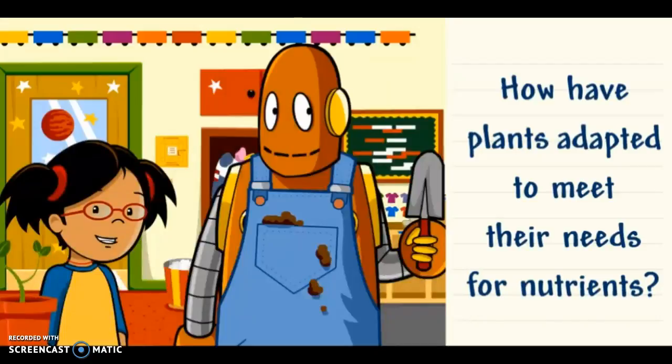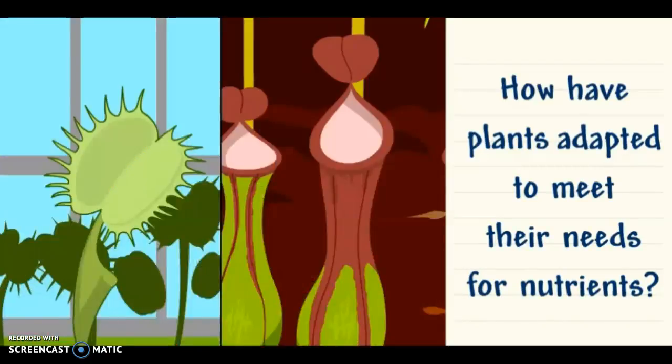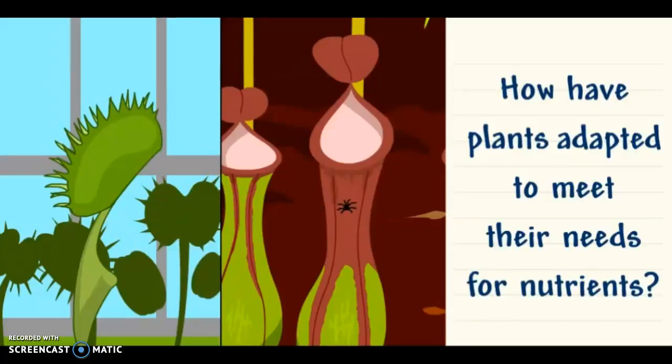Many plants get nutrients they need to grow from soil, but some plants grow in places where soil doesn't have a lot of nutrients. The Venus flytrap and the pitcher plant have adapted by using animals for food.